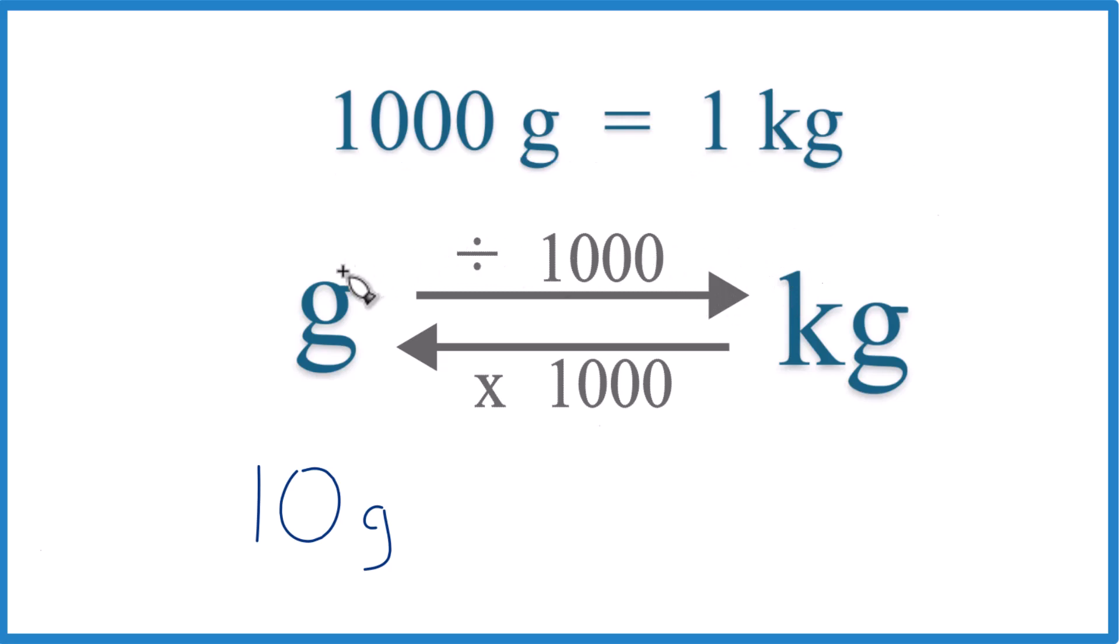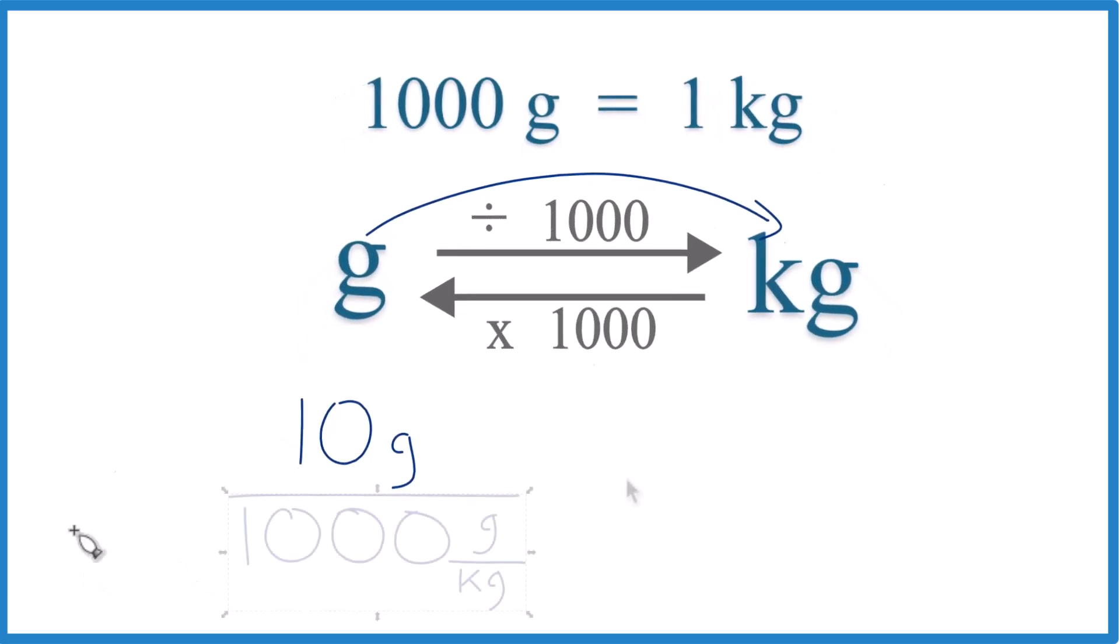When we go from grams to kilograms we're just going to divide by a thousand. So we'll take our 10 grams here and we're going to divide that by 1,000. And remember there are 1,000 grams in one kilogram. That's our conversion factor.